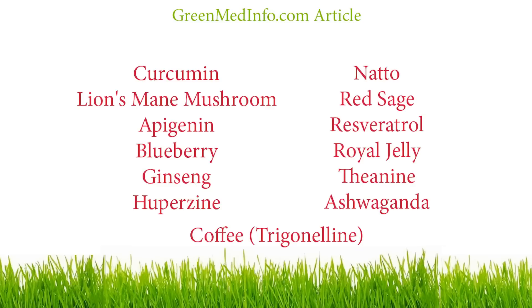Other research on neurogenic substances include curcumin, lion's mane mushroom, apigenin, blueberry, ginseng, huperzine, natto, red sage, resveratrol, royal jelly, theanine, ashwagandha, and coffee.